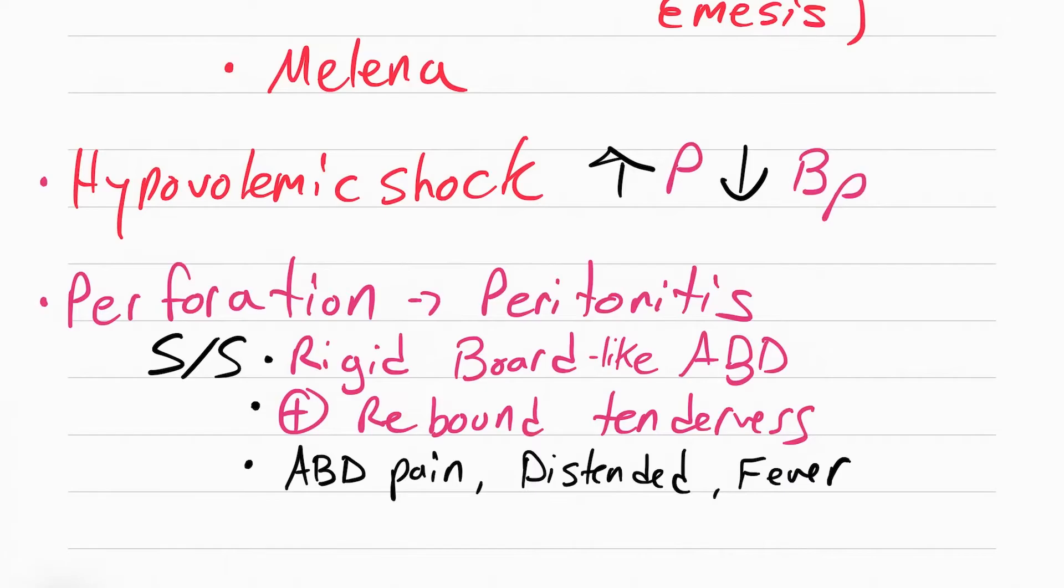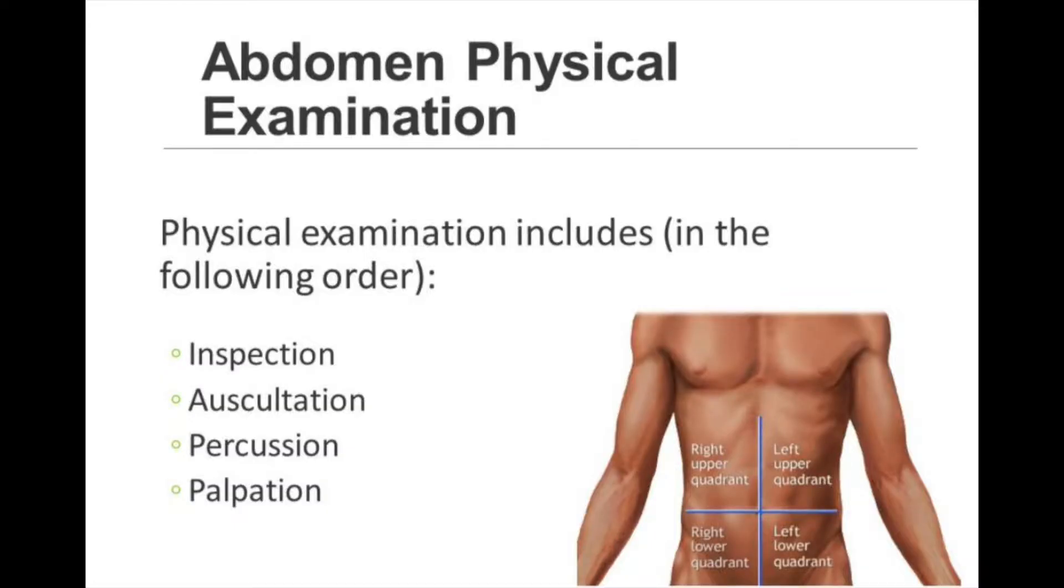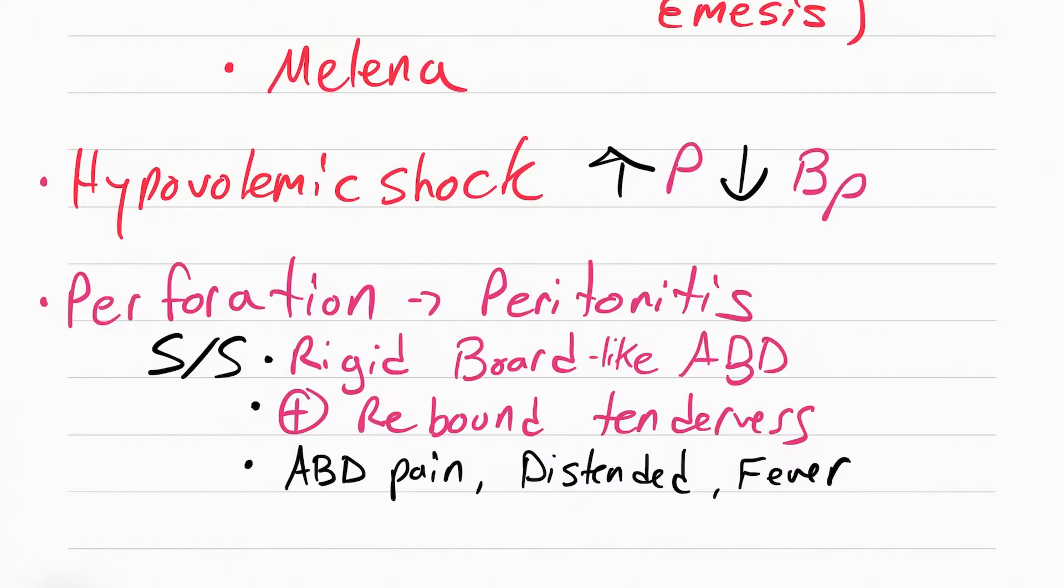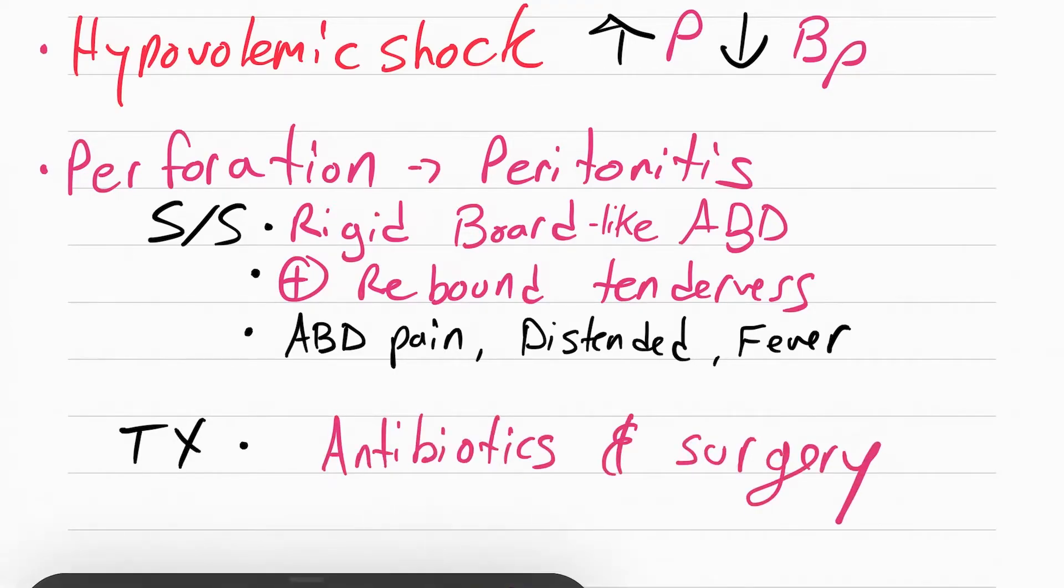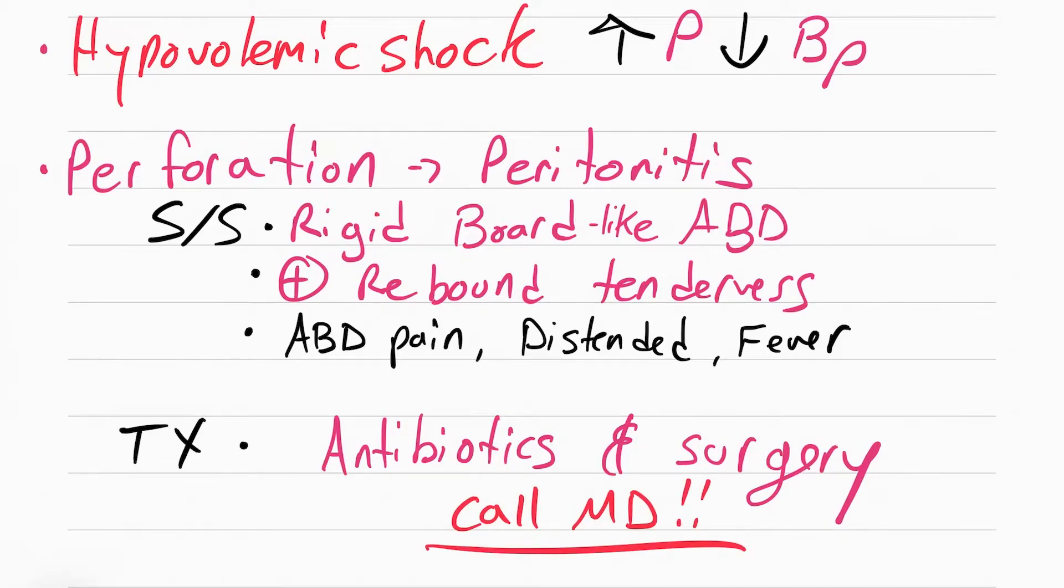This is a good time to remind you a bit of fundamentals. Remember how to assess the abdomen? The first thing you do is inspect it. Then you auscultate it. Then you percuss. And the last thing you want to do is palpate it. Make sure you palpate the area that hurts last. The treatment for perforation and peritonitis is antibiotics and surgery. We need to make sure we call the doctor when we see these symptoms.